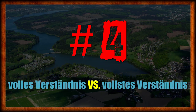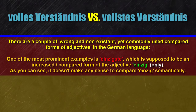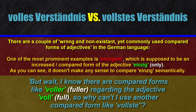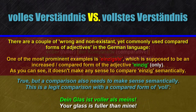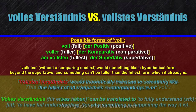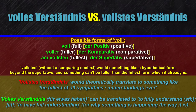Number four: volles Verständnis versus vollstes Verständnis. While some Germans might simply not know rules that apply to the previous example, this one is more obvious, at least when you think about it properly. You might know that the term 'einzigste' is a wrong German form of the adjective einzig, meaning 'only,' which isn't comparable. Voll, meaning full, can be compared — 'Dein Glas ist voller als meins.' Vollste is a form of voll that neither exists nor makes much sense, since voll already implies something is full — well, as long as it's not a comparison.